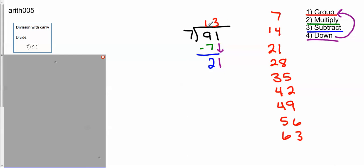After I do that, I multiply. Three times seven is 21. And it comes out even. So I am good to go. So how many groups of seven fit into 91? Well, 13 groups do.